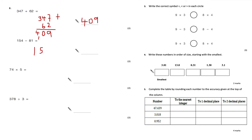Next: 154 subtract 81. 4 take away 1 is 3; 5 take away 8 — I need to borrow; 15 take away 8 is 7. The answer is 73.